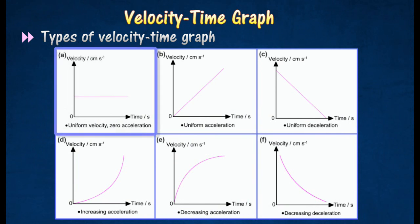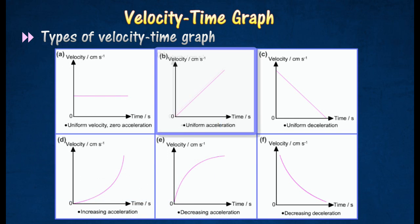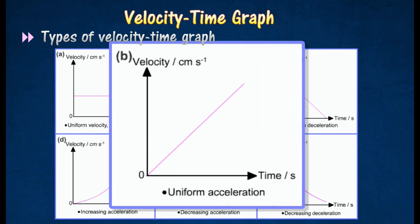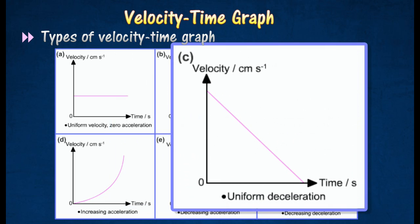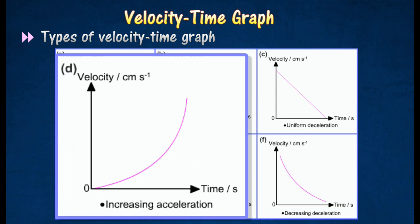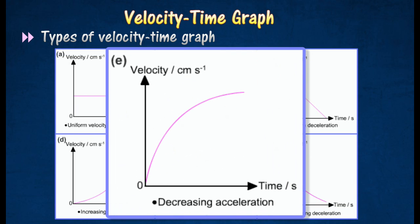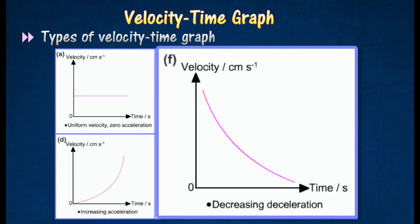Here are several types of velocity-time graph. Graph A shows that the object is moving at uniform velocity or zero acceleration. Graph B shows that the object is moving with uniform acceleration. Graph C shows that the object is moving with uniform deceleration. Graph D shows that the object's acceleration is increasing, Graph E shows that the object's acceleration is decreasing, and Graph F shows that the object's deceleration is decreasing.